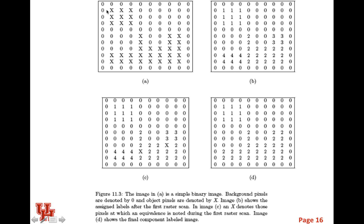We start in the top left and move right — there are no object pixels, so we drop to the next level. We come across a point that is an object, check our list of discovered objects, see we've found none so far, and assign it the value 1. The next pixel is also an object, so we check to its left and above it, see we've already assigned 1, and assign this the minimum of its left or above neighbors — also 1. We continue this way: each object pixel takes the minimum label of its already-labeled neighbors.